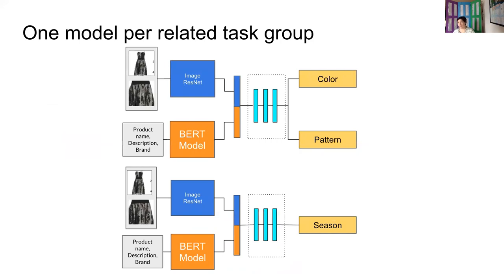Another idea we discussed was having one model per related task group. So we had seen that color and pattern seemed to train well together and season didn't. So maybe we separate things out that way. This was still not a very satisfactory solution for us because we knew anytime we added a new task, we'd have to train every single model all the way through with the new task to figure out if it destructively interfered with an existing task or paired well. And that just seemed like way too much work. We also would have had multiple models to maintain, which we, again, did not want to do.